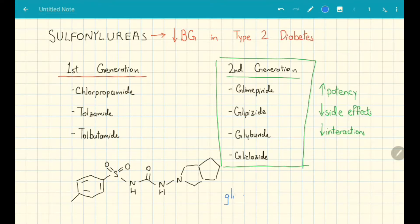Down here, we have the chemical structure of glyclozide, and you can identify its sulfonylurea functional group here.